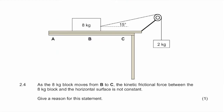They tell you that the 8 kilogram block moves from B to C, and as it moves from B to C, the kinetic frictional force between the block and the surface is not constant. They ask us for a reason for that. As you move from B to C, the angle between the rope and the horizontal is increasing.